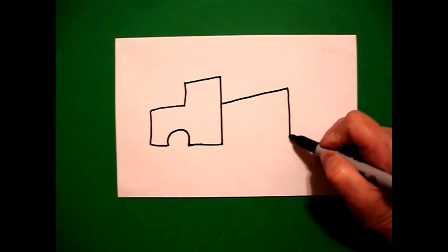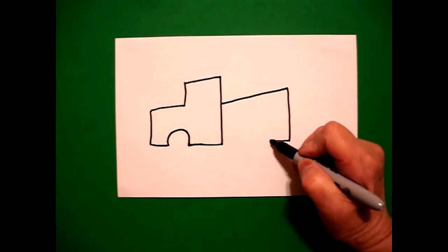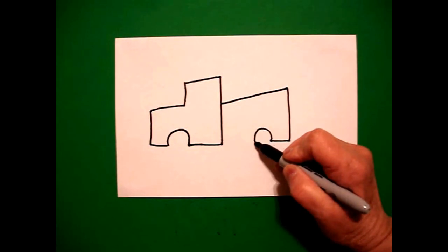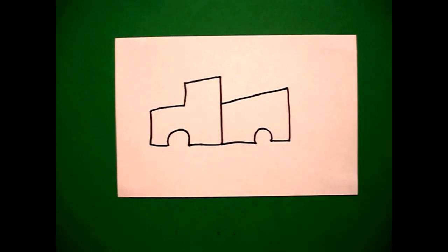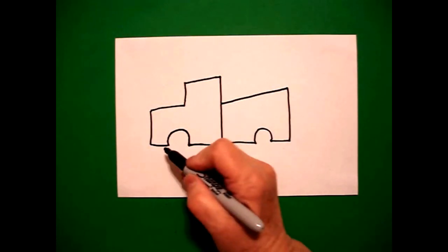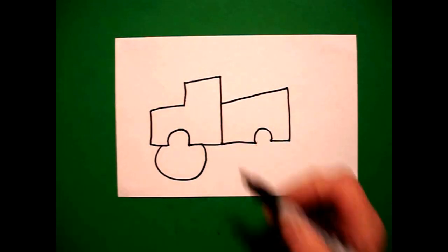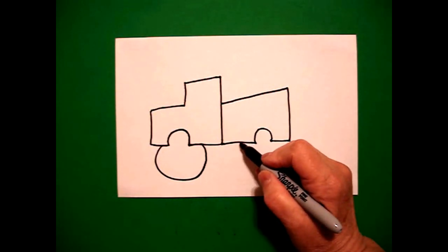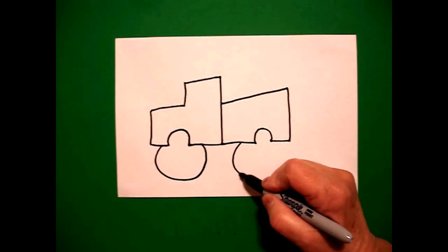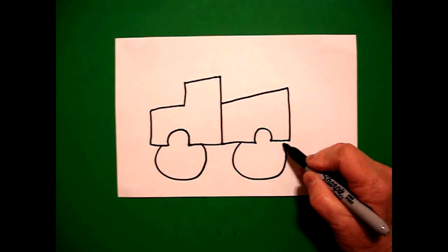Straight line down, straight line in, curve line, straight line, connect. I come back to the left and I draw a big curve line, connect on that. I come back to the back and draw another big curve line, connect.